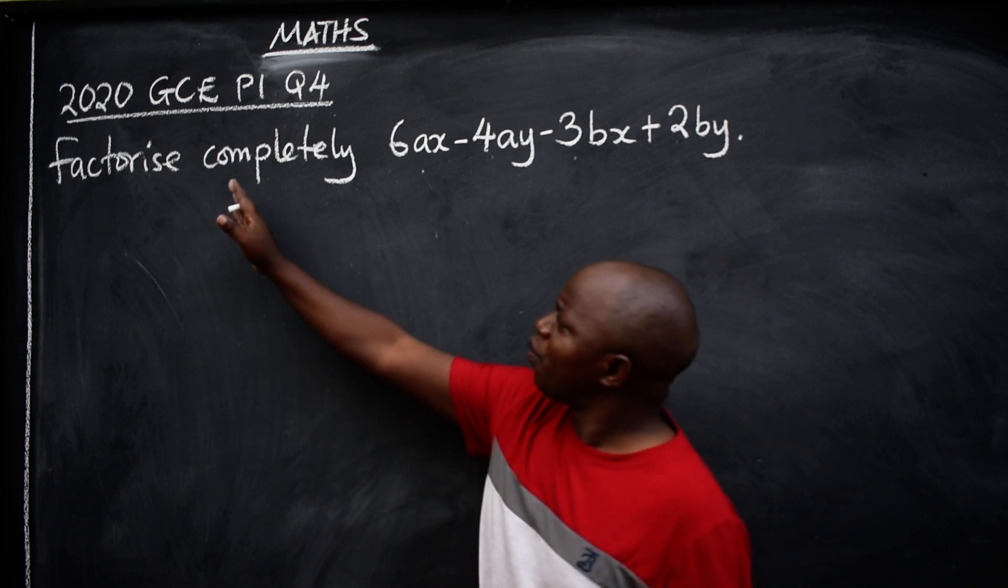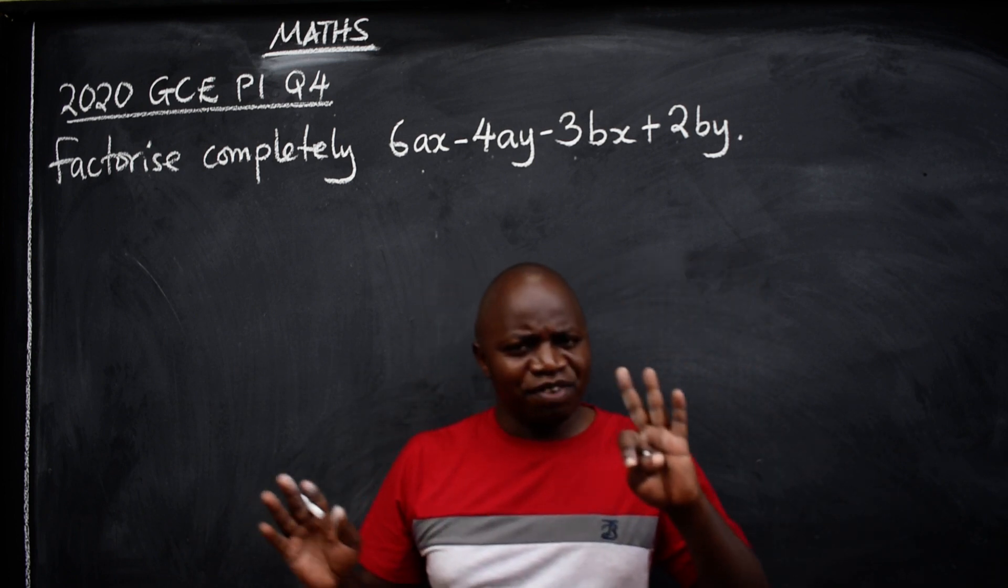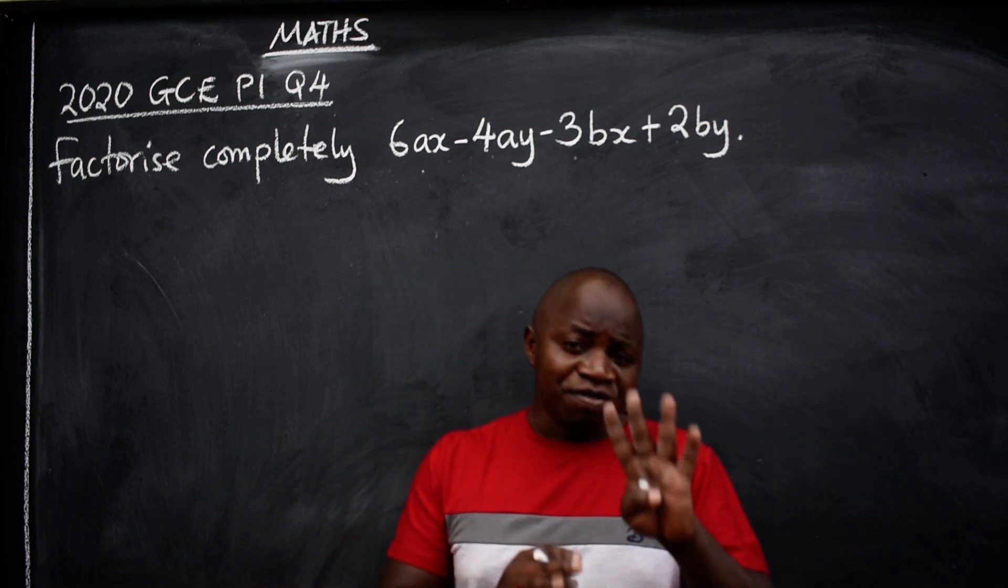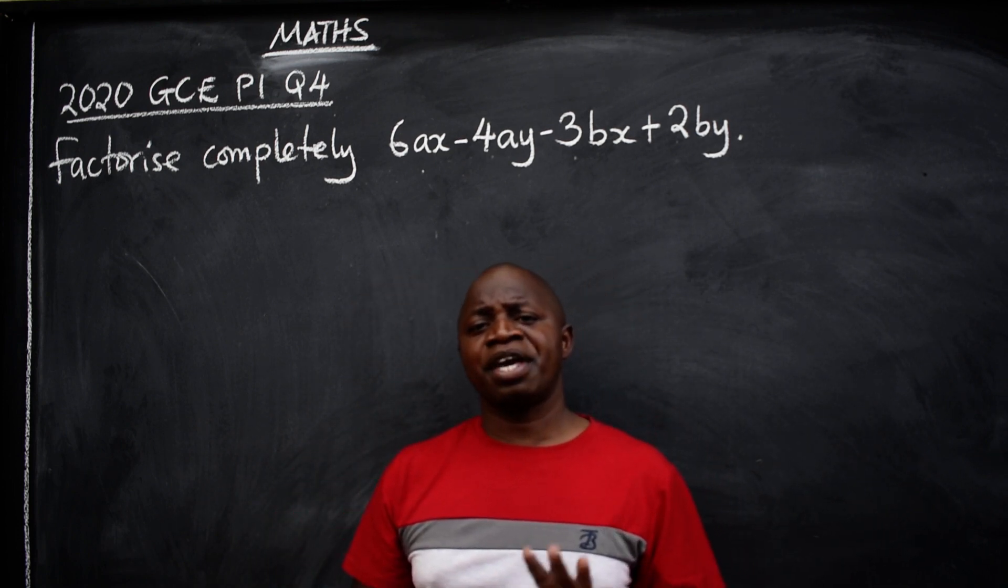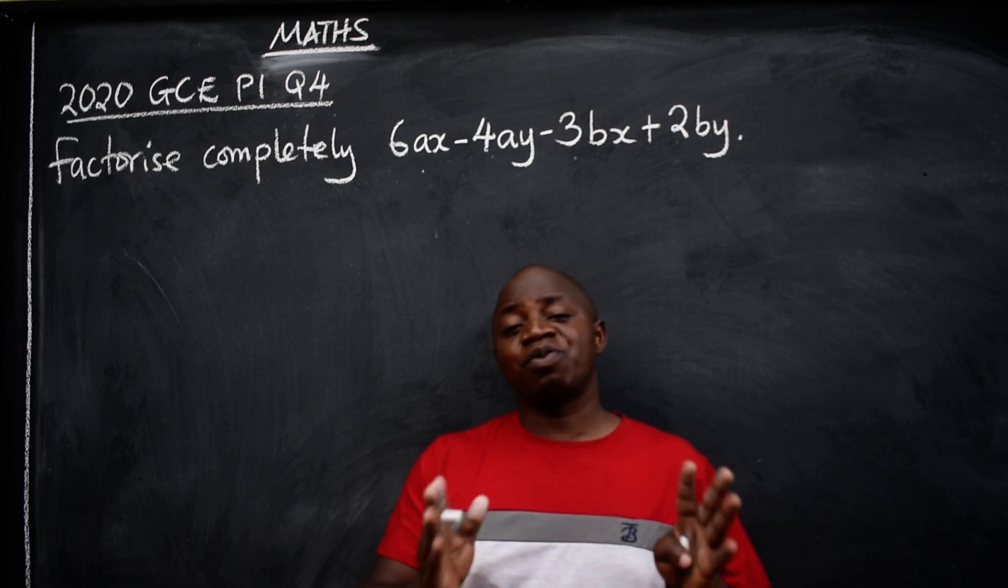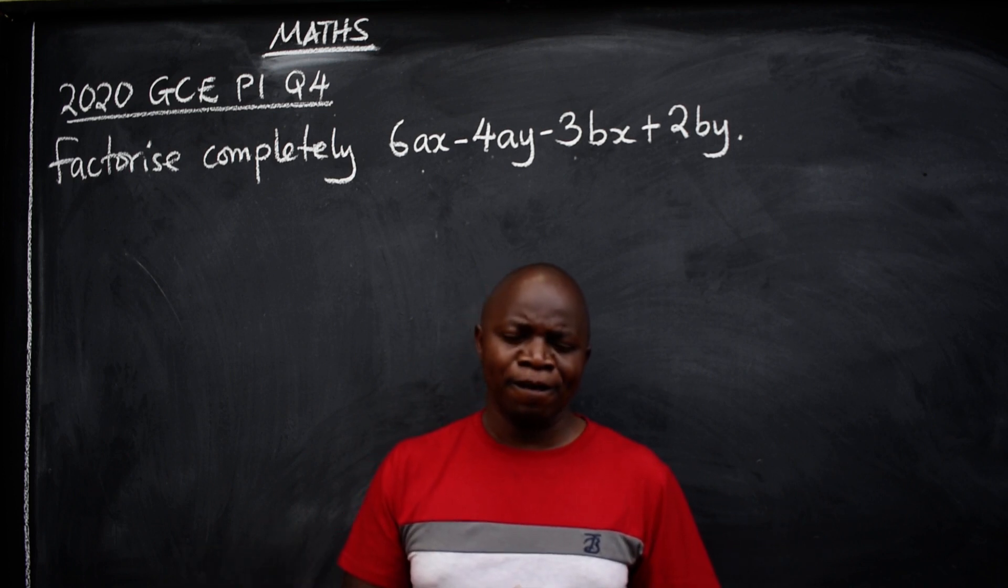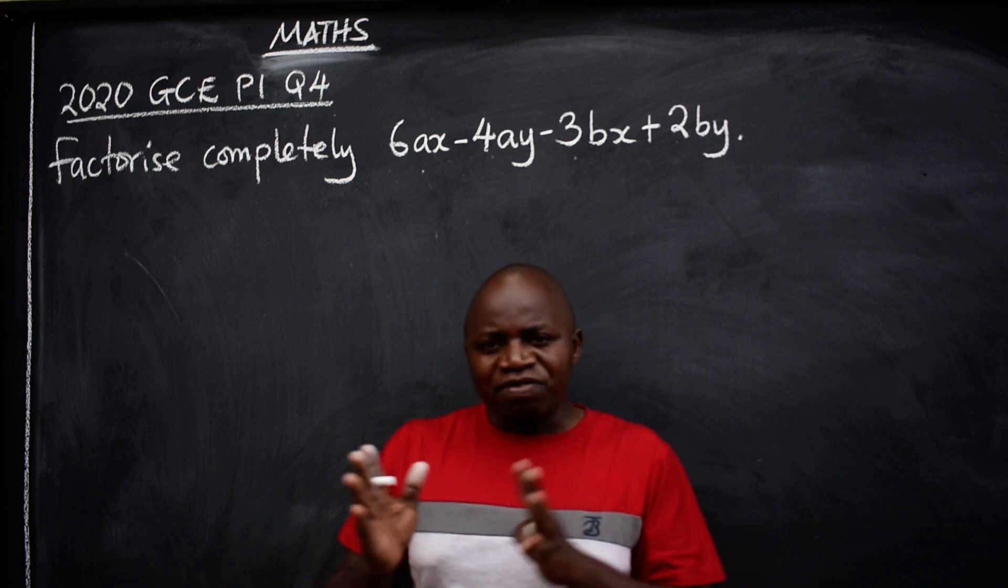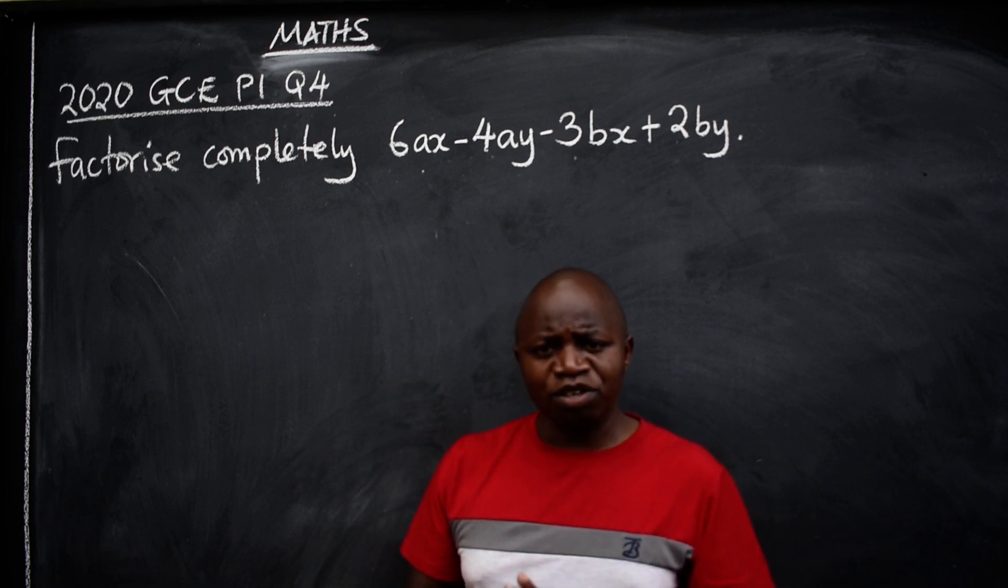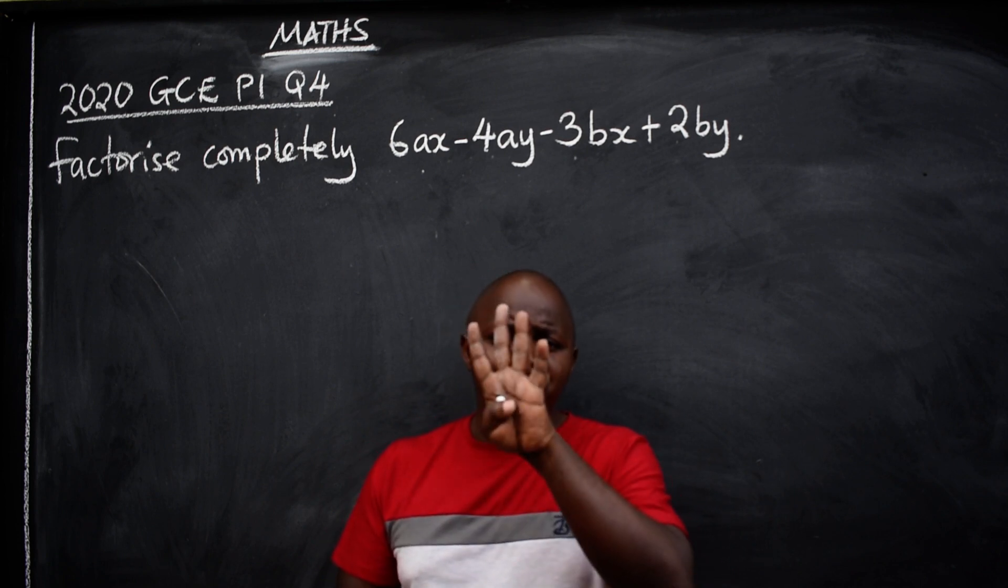Let's start. We are taught to factorize. Now remember we have different types of factorization. We have common factorization, we have difference of two squares, we have factorization by grouping and quadratic factorization. How do you identify? Quadratic factorization has got three terms. Difference of two squares has got two terms. Grouping has got four terms.